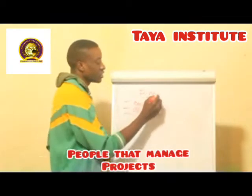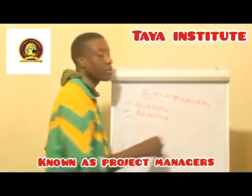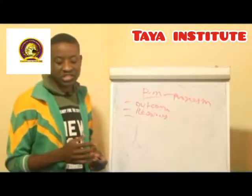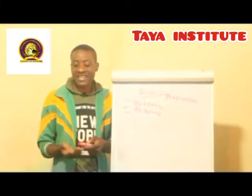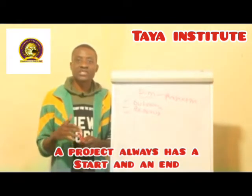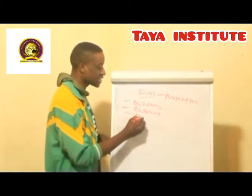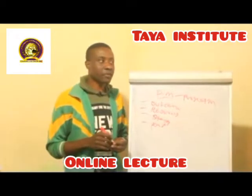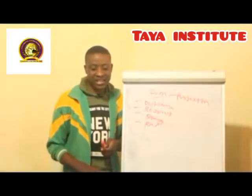People that manage projects are actually known as project managers. So, a project is a piece of work, which is not a process or an operation, but it has a start and it has an end. You must understand that the project always has a start and the project always comes to an end.